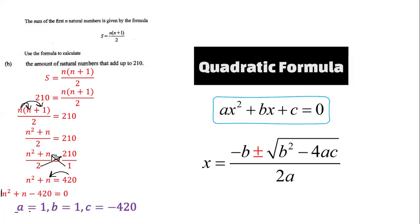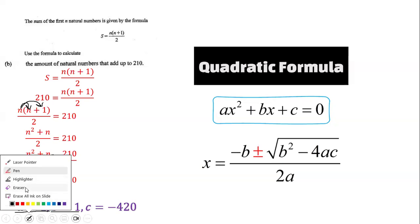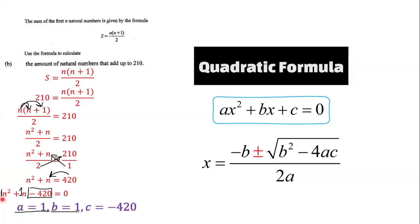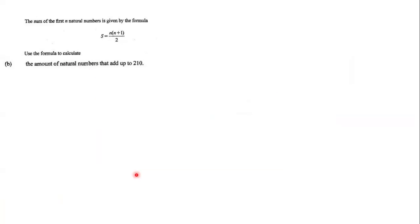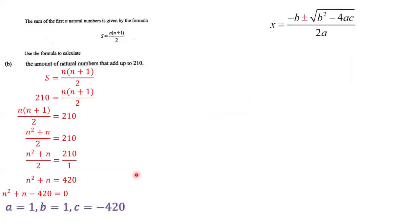In our equation, the coefficient of n squared is 1, so a = 1. The coefficient of n is also 1, so b = 1. And c is equal to negative 420, which is the constant — the number by itself.